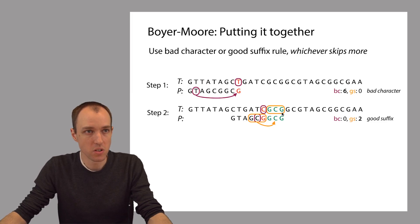The good suffix rule does skip some alignments. So this is GCG. This is the string of characters that we matched within T. There's another occurrence of GCG right here. So the good suffix rule is going to let us skip two alignments.